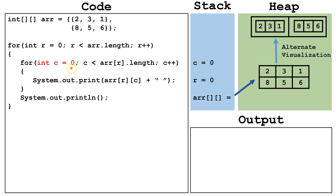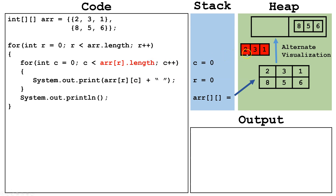Now we declare c and set it equal to zero. R and c are often variables we use for row and column. Next we check is c less than arr index zero dot length. We're taking out the 1D internal array at index zero of the outer array, which is row zero, and counting how many columns. There are three columns in row zero, so arr index zero dot length is three. Since c is zero, which is less than three, we continue. Now we print out arr row zero column zero.